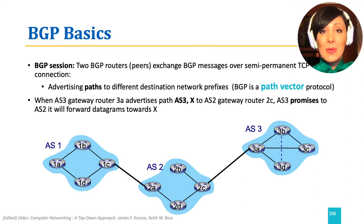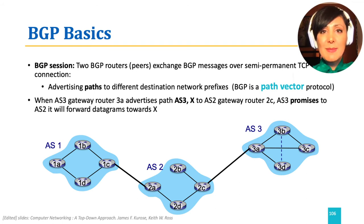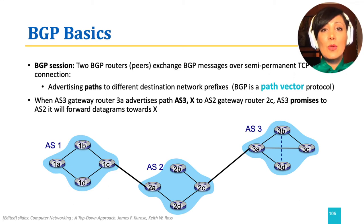Two BGP routers that have TCP connections are called peers. EBGP peers exchange advertisements of paths to different destination networks. BGP is a path vector protocol, as it works by building vectors or lists of ASs that need to be crossed in order to reach a certain destination in the network.